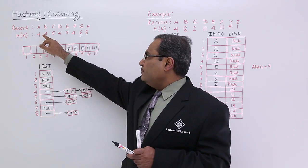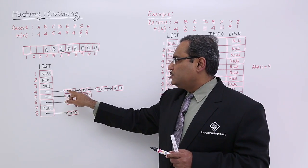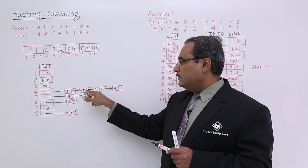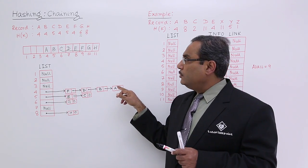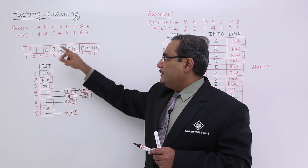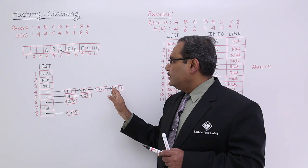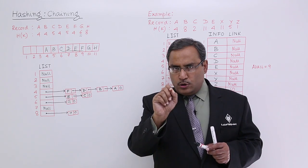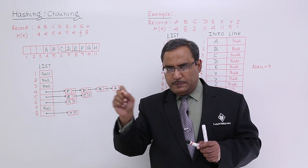So at first A will come. A will be the first node from the fourth location, so pointer will be there. It will be in the form of linked list. So that means at the fourth location, I will be getting A, then B will come, then B will be prepended to A. To insert one node at the end of a linked list, that means you are supposed to traverse the entire list.